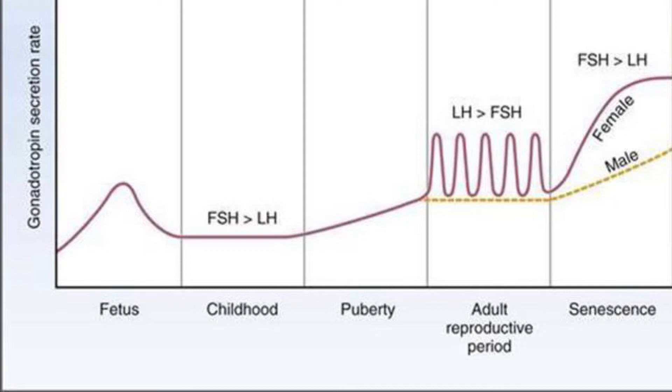When the testes and ovaries are fully developed, GnRH, LH, and FSH production are controlled by the levels of testosterone and female sex hormones like estrogen and progesterone.